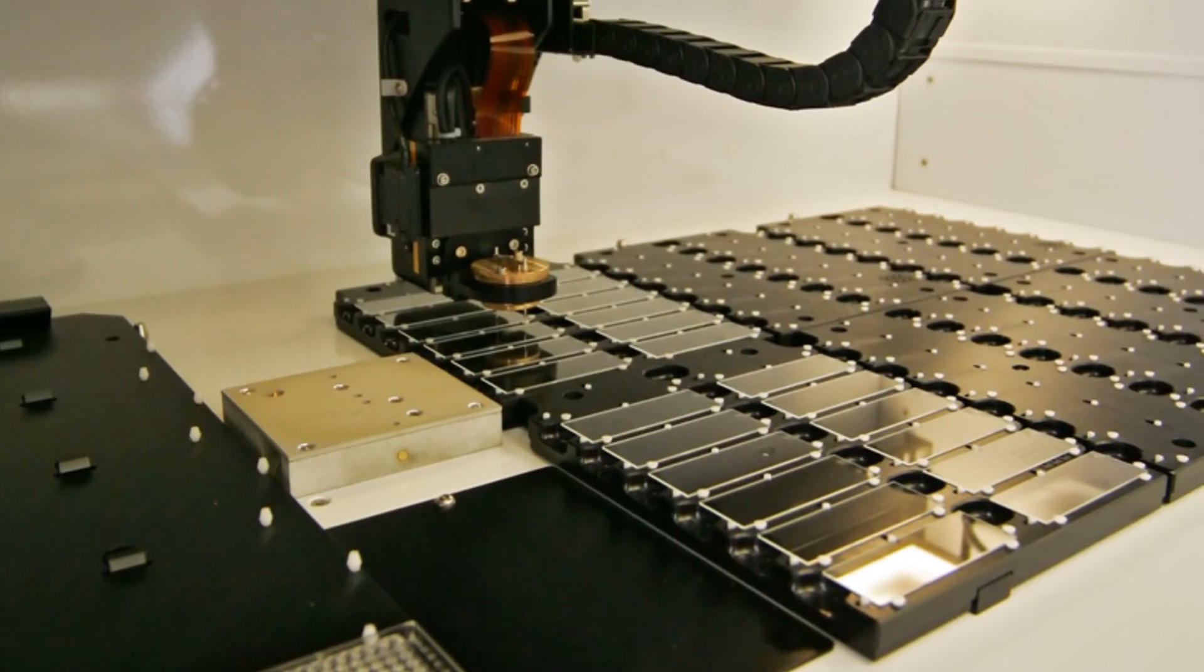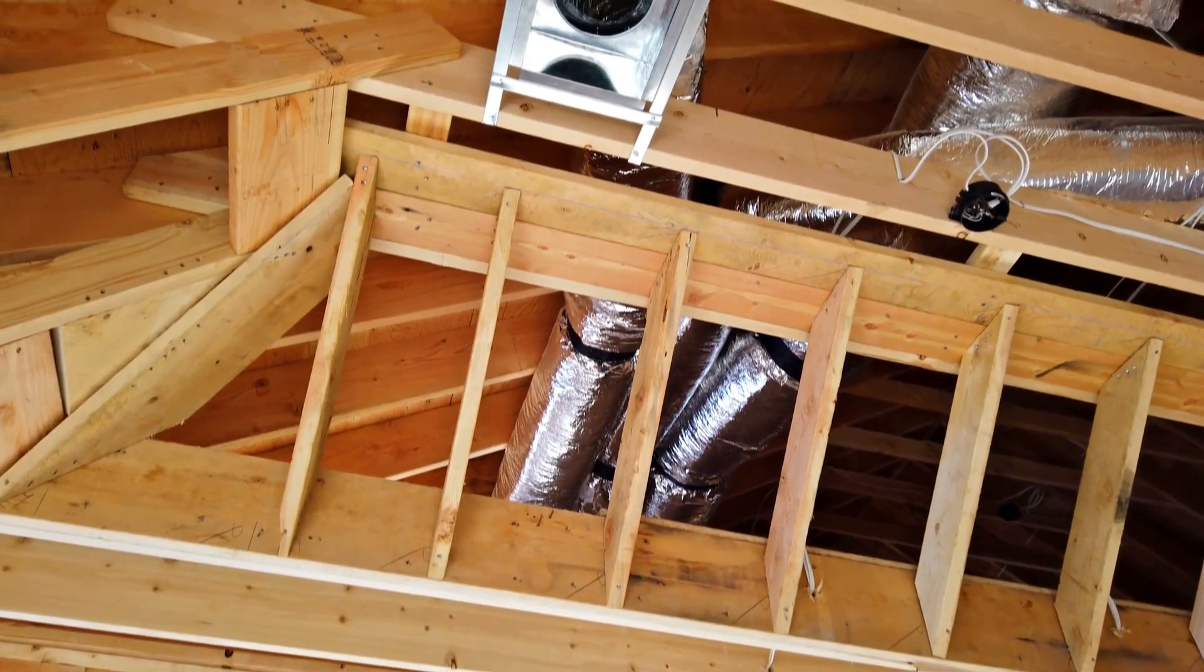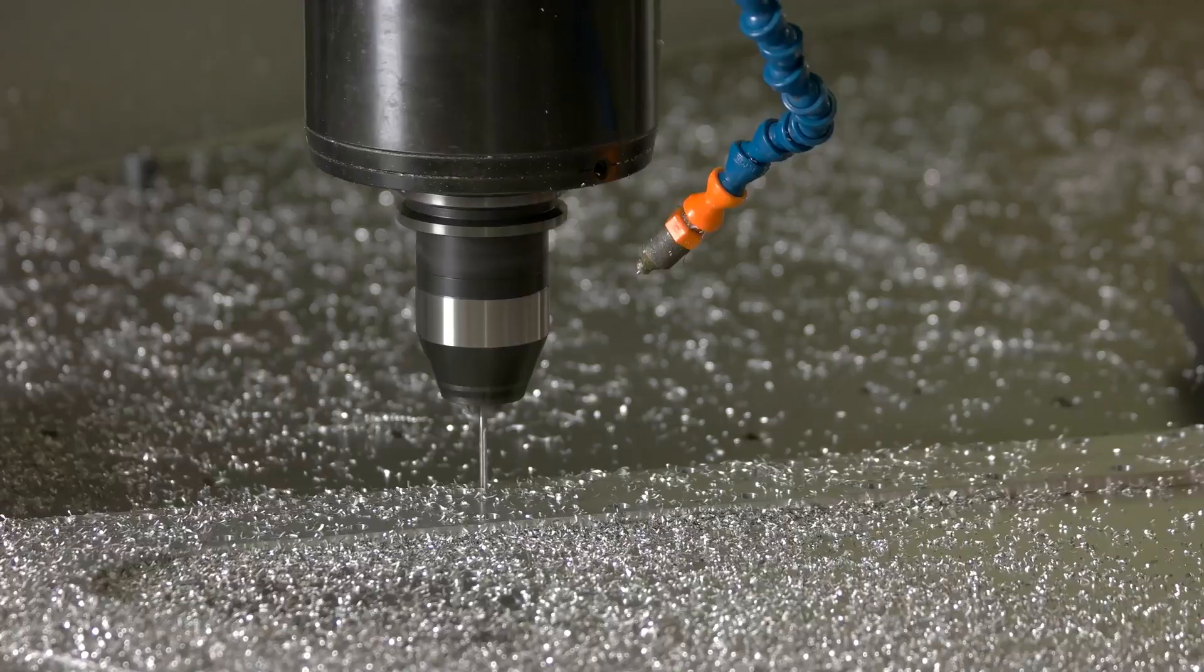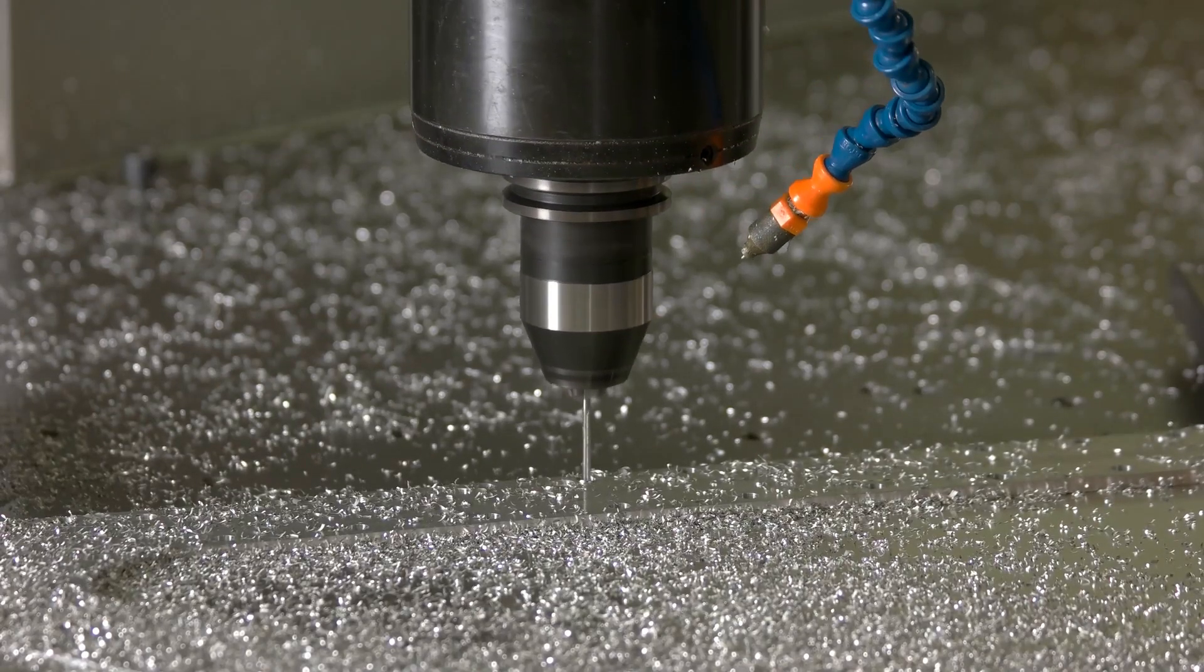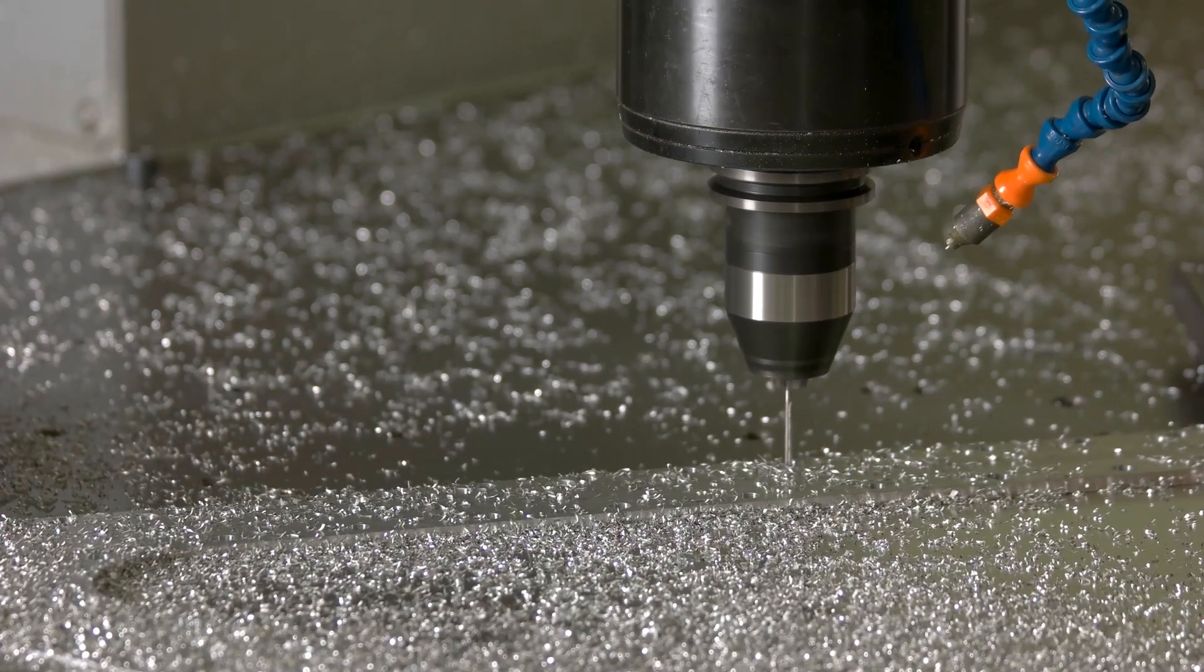The process is incredibly precise, down to the nanometer level. The slightest vibration or temperature change can ruin the entire chip, necessitating extreme control measures. EUV machines operate with nanometer precision, a testament to human ingenuity and the relentless pursuit of perfection in technology.